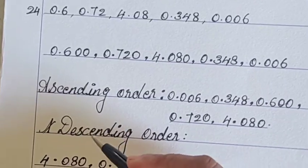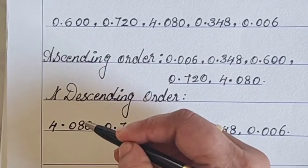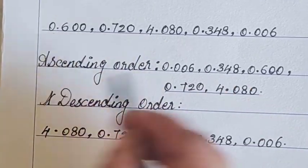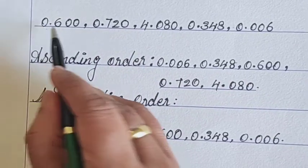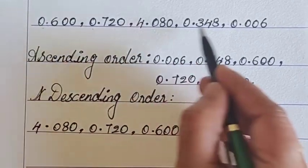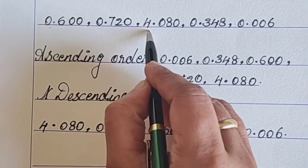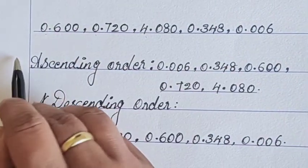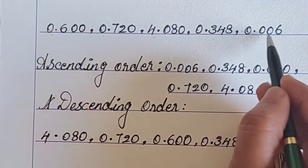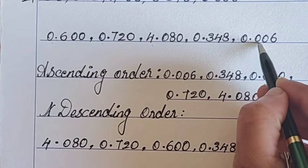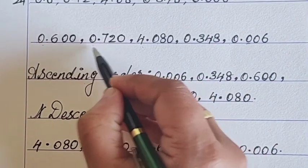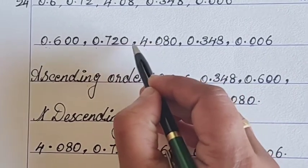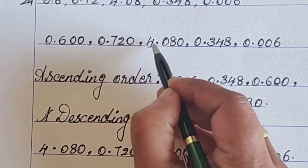Now ascending order, the same way like whole numbers, how we do, the same way. Means first, ascending order, the smallest number we have to take. First, check it out. Here is a whole number. So, this is the biggest number. The remaining numbers having 0. So, 0.0. This is the smallest one. All the places, numbers having. Here also 0.0 is there, but this is a whole number part. It's the biggest number.